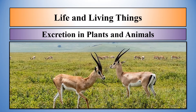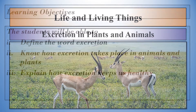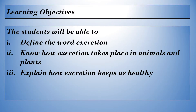Dear students, today the topic of our lesson is excretion in plants and animals. The learning objectives of today's lesson: the students will be able to define the word excretion, to know how excretion takes place in animals and plants, and to explain how excretion keeps us healthy.